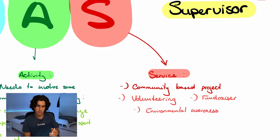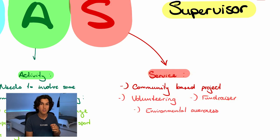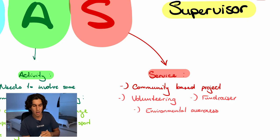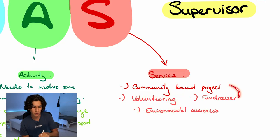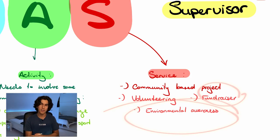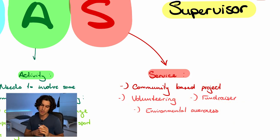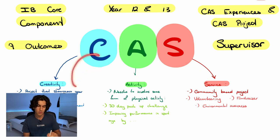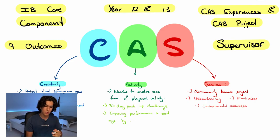The last part is Service — a community-based project. The service experience or project is something in your community that helps people out, and of course you can't be paid for it. Think volunteering, fundraisers, environmental awareness campaigns, or something like a beach cleanup. Those are the three main aspects of CAS.